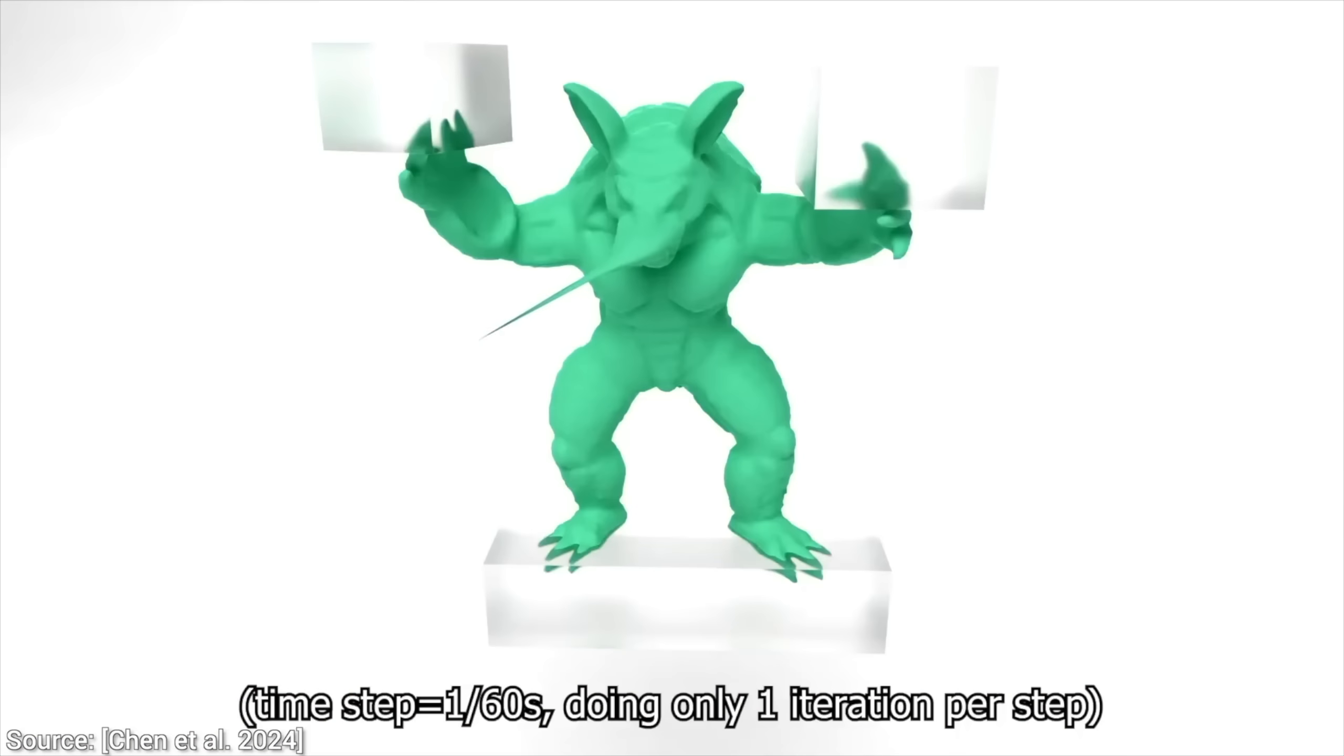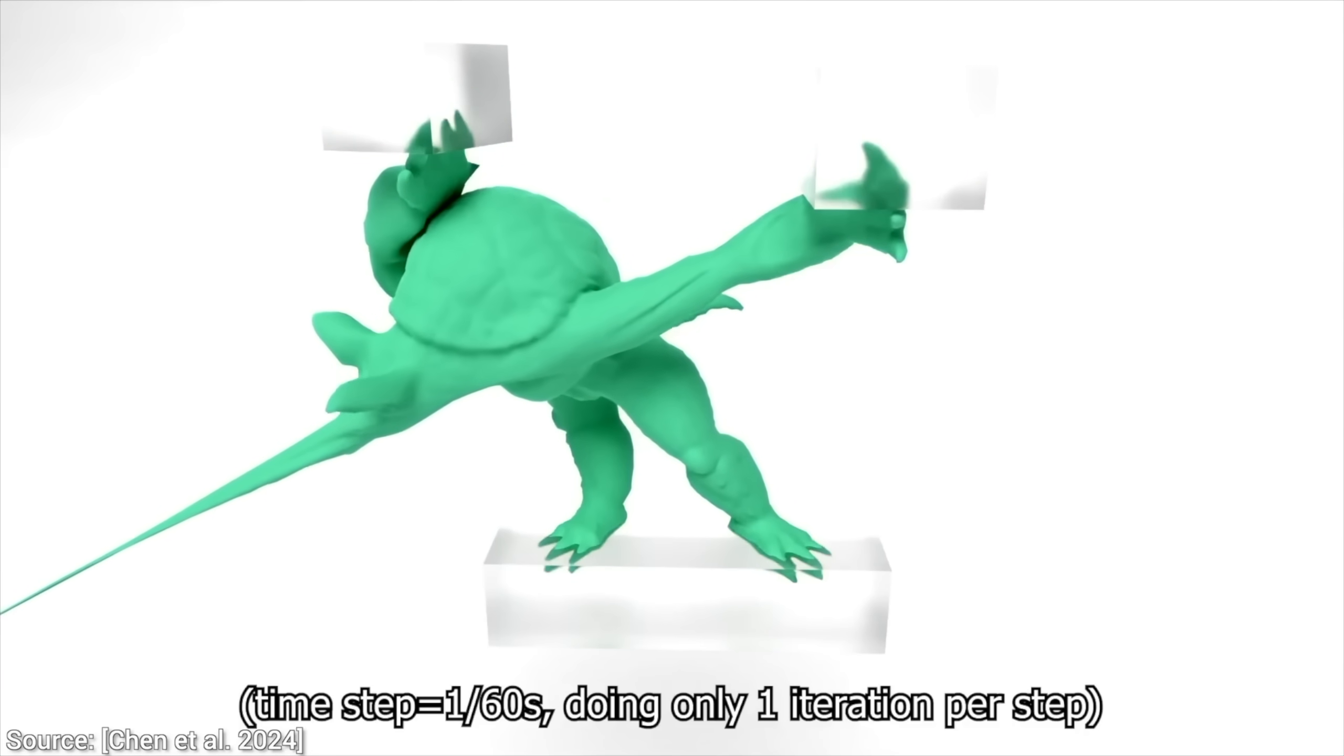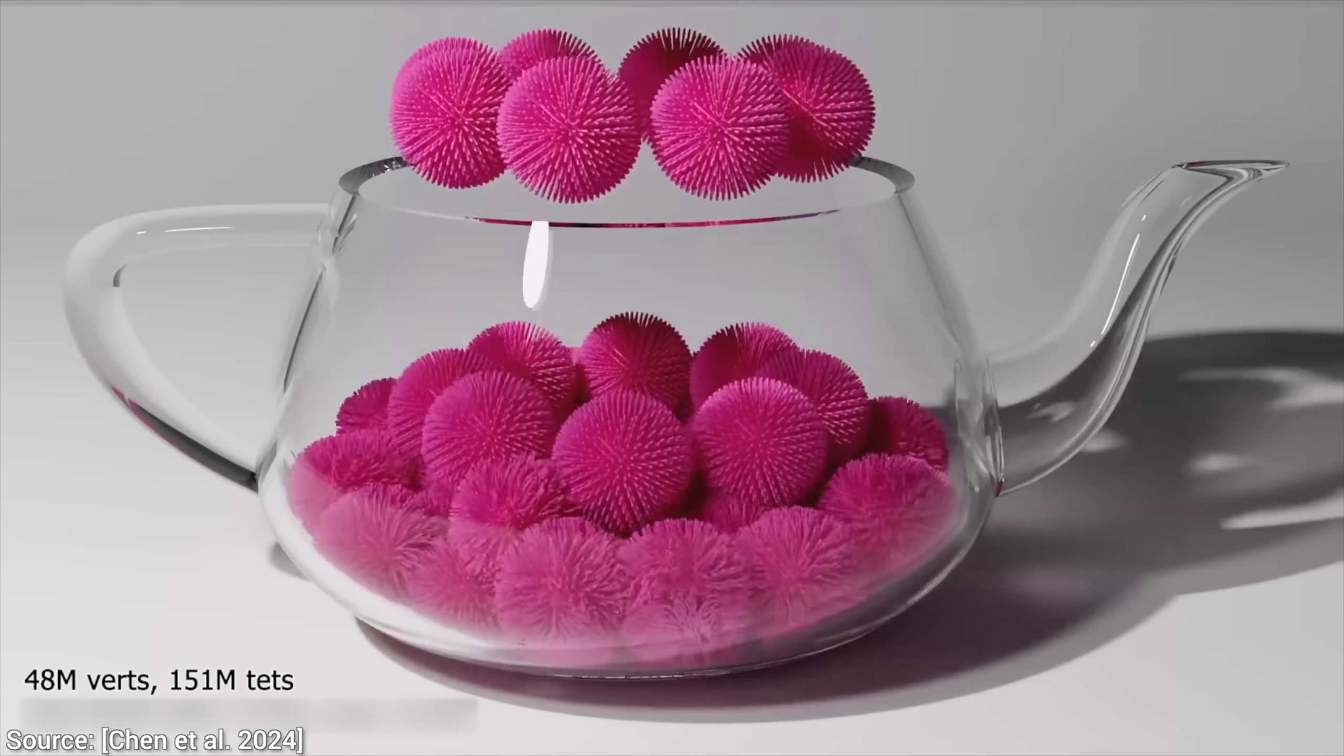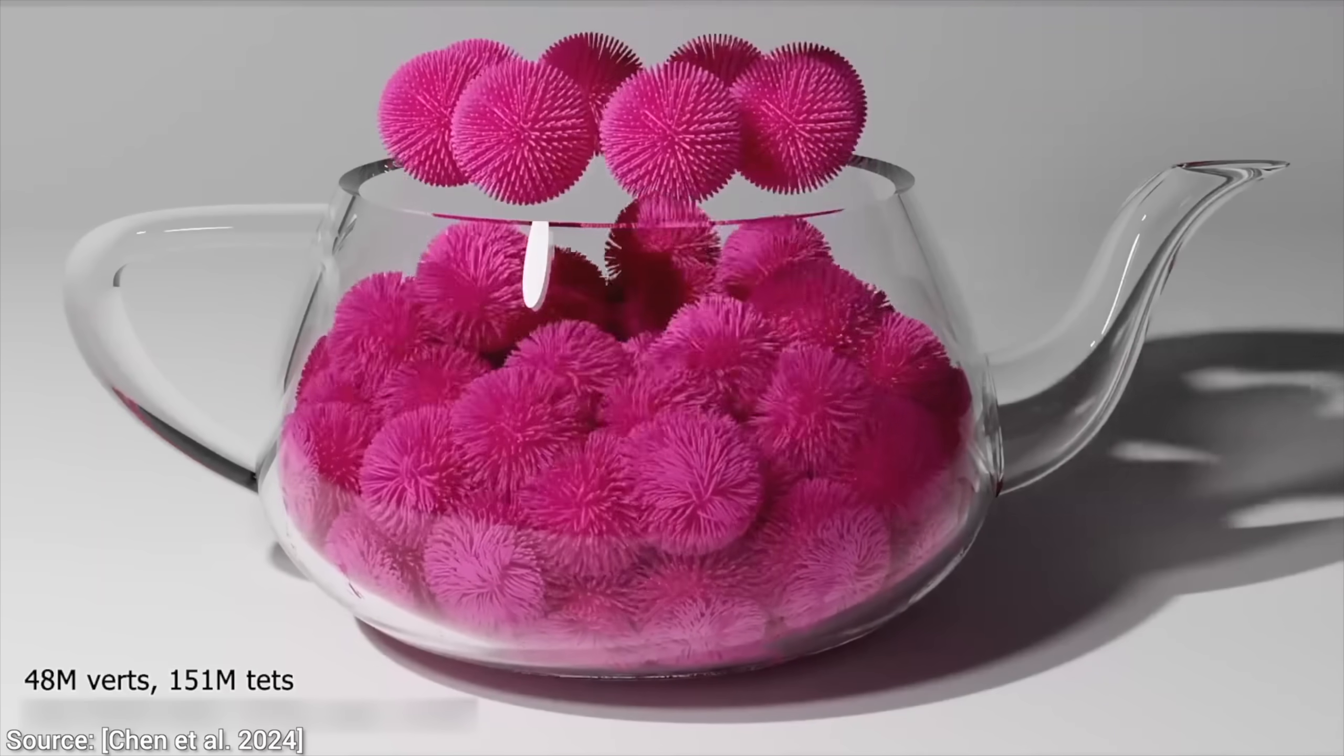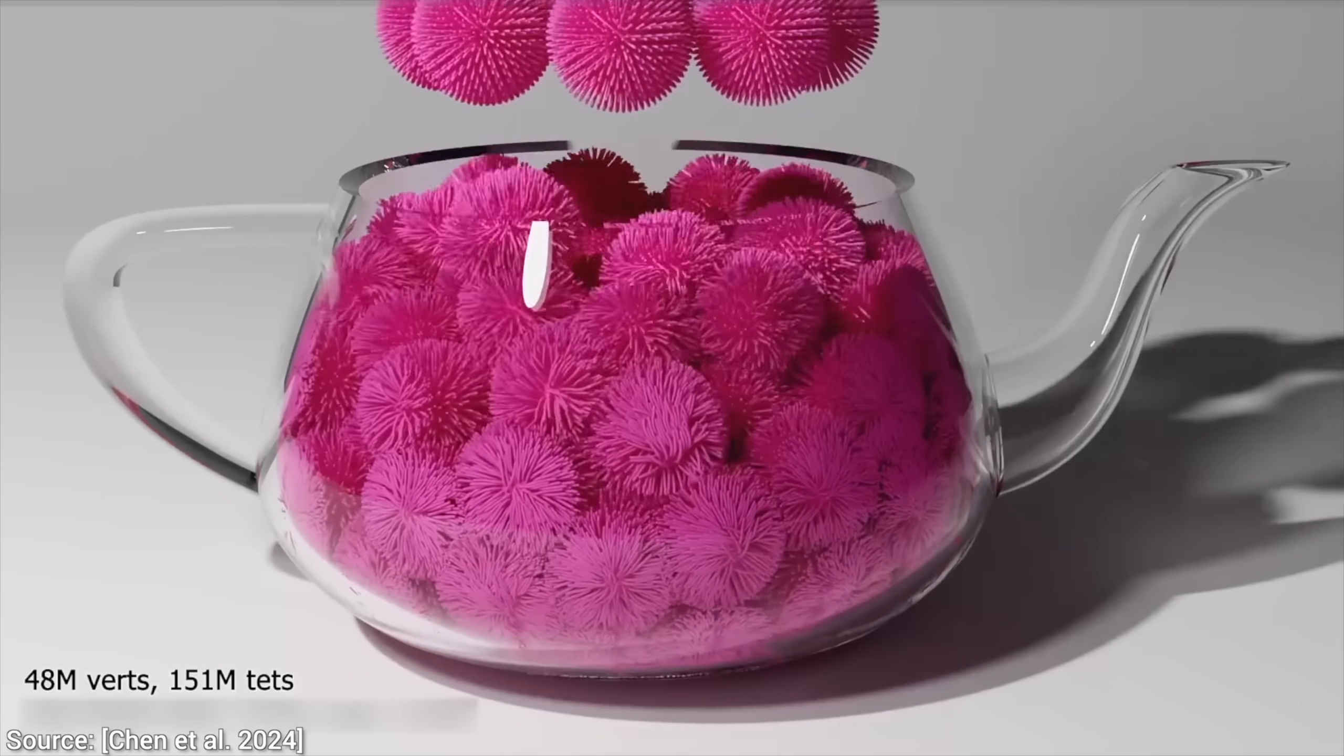Now, a previous version of it was called Vertex Block Descent, VBD, that could simulate these incredible scenes that are modeled as an interaction of millions and millions of points. This would be incredible to have in all kinds of games and movies. So, are we done here? Why write this newer paper? Do we even need more research here?